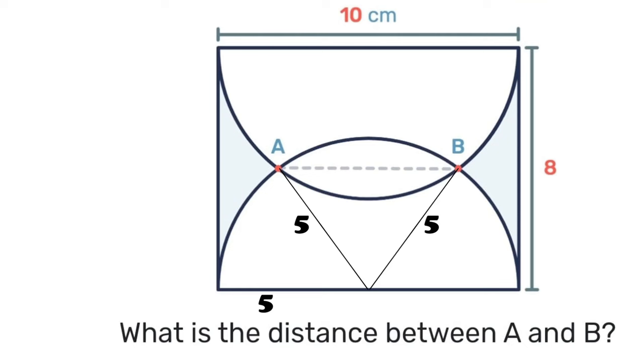Once again because it is symmetrical, that distance of 8 which is the width of the rectangle would be the height of this triangle that is being constructed. So that is 4.